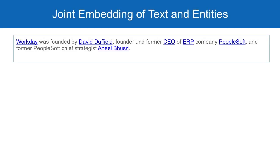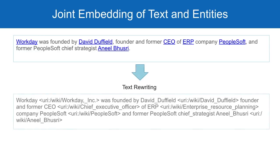As an input to the system, we compute representational embeddings of both knowledge base entries and surface form n-grams side by side in the same vector space, using terabytes of training data from Common Crawl, Wikipedia, and other sources.